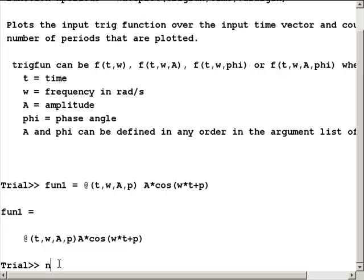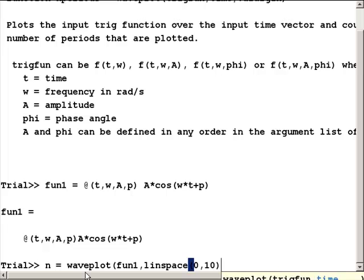Back to the command window here, and let's call waveplot. We'll say n equals waveplot. We're just going to assign that number of periods that waveplot calculates to the output variable n. The first input is the function name, so that would be fun1. The second input is the time vector, and I'm just going to define that with linspace right here in the function call. So, linspace 0, go from 0 to 10, and use the default 100 points.